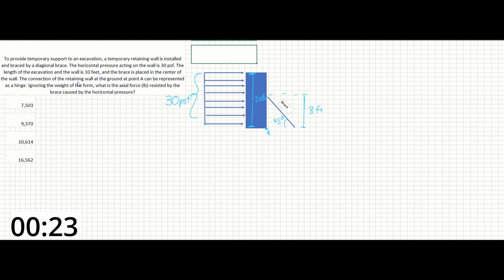The connection of the retaining wall at the ground at point A can be represented as a hinge. Ignoring the weight of the form, what is the axial force in pounds resisted by the brace caused by the horizontal pressure?